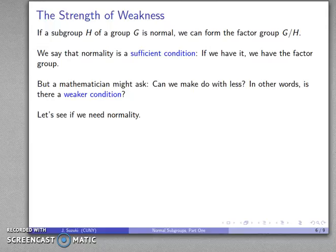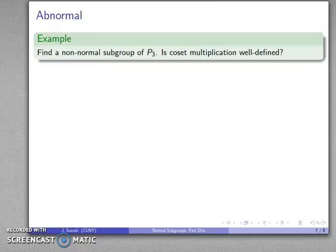Well, let's see if we actually need normality. Since every subgroup of an abelian group is normal, we have to consider the non-abelian groups. The simplest one we know of is P3, so is coset multiplication well-defined?